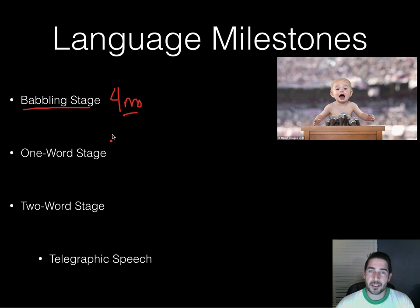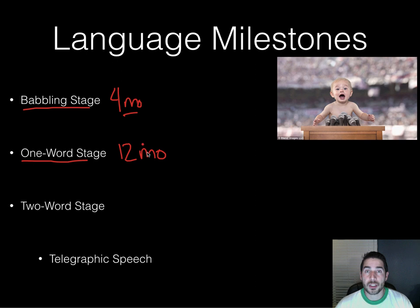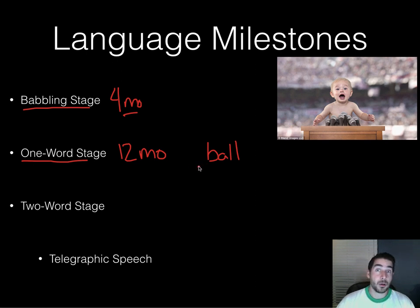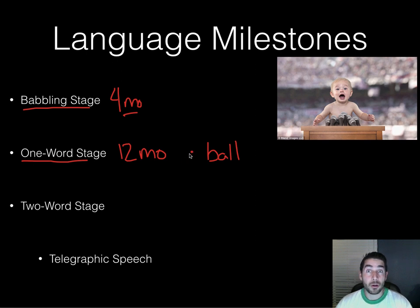At about 12 months, you enter the one-word stage, where you might say 'car' or 'ball.' In the one-word stage, a single word like 'ball' can mean many different things — it could mean 'I want the ball,' 'there's a ball over there,' or 'look what I have.' One word can carry multiple meanings.